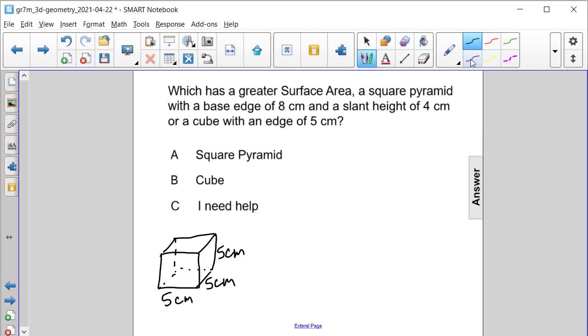And in order to calculate the surface area of this cube, you're going to multiply 5 times 5 for one face and get 25 square centimeters. And then because there are 6 faces, you're going to multiply this quantity by 6.